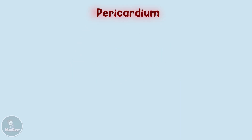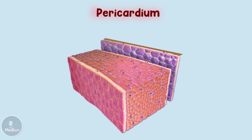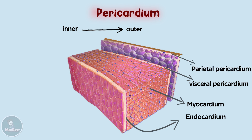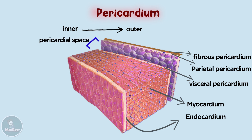The pericardium is a fluid-filled sac that surrounds the heart and the roots of the major blood vessels that extend from it. Looking at a section of the heart wall from inner to outer, we have the endocardium, a thick myocardial layer, then the pericardium, which consists of three layers: the visceral pericardium (also called the epicardium), then the parietal pericardium, and lastly the fibrous pericardium. Between the visceral and parietal pericardium is a space called the pericardial space, which normally contains 15–50 milliliters of serous fluid.